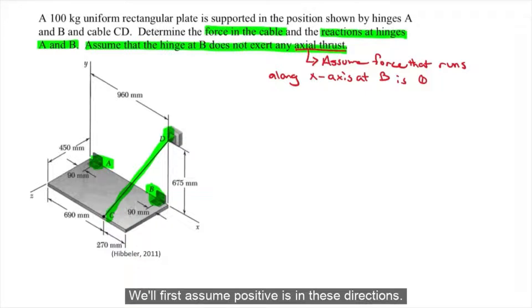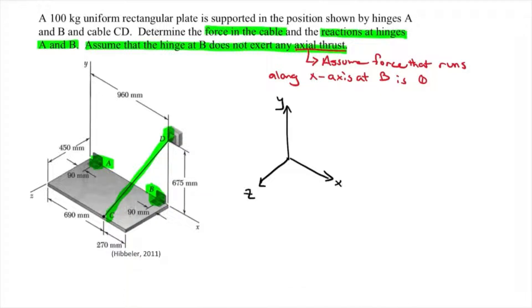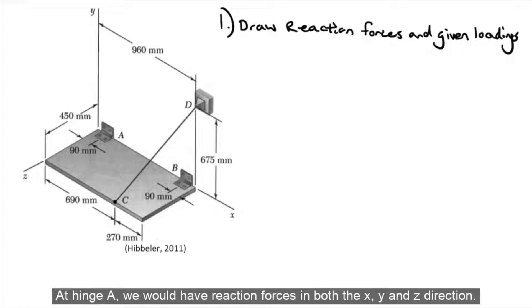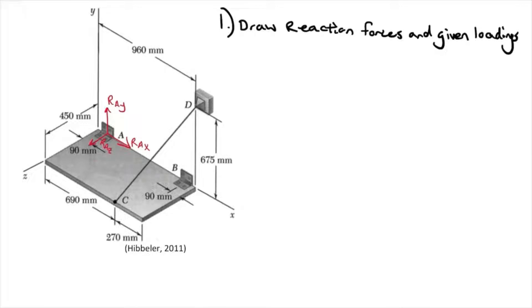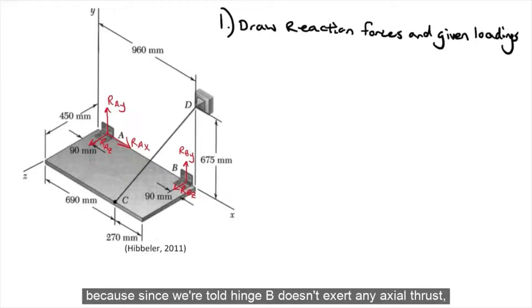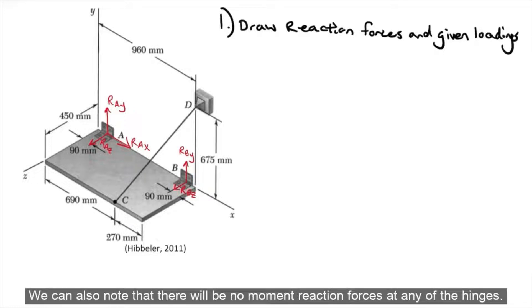We'll first assume positive is in these directions. The first step is to draw our reaction forces and given loadings on the free body diagram. At hinge A, we would have reaction forces in the x, y, and z directions. At hinge B, we would only have reaction forces in the y and z directions, because since hinge B doesn't exert any axial thrust, there won't be any reaction force in the x direction. We can also note that there will be no moment reaction forces at any of the hinges.